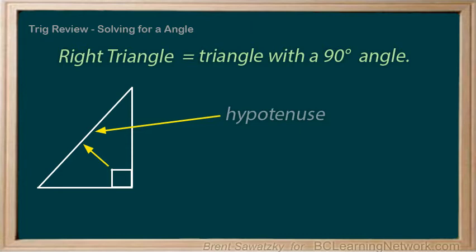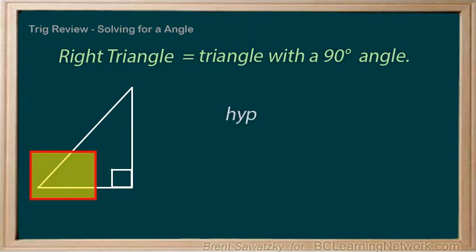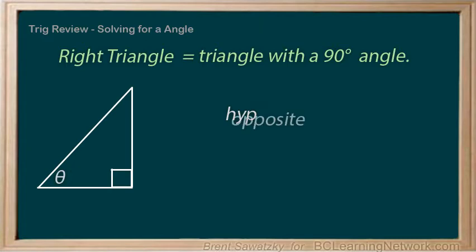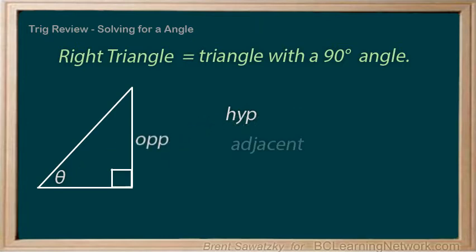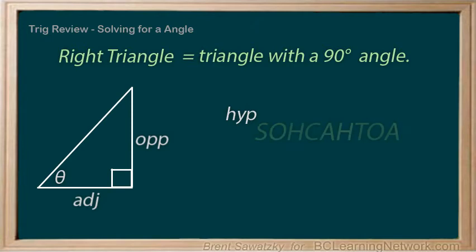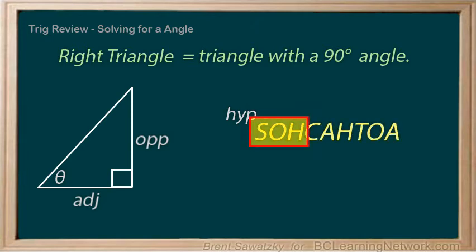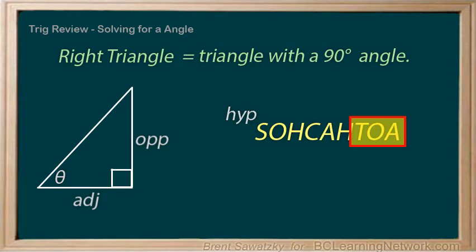Once we determine which angle we'll be looking for — let's call it theta — we can determine that the opposite side is right across from that angle, and the adjacent side is beside or adjacent to our angle. From there, we choose an appropriate trig ratio: SOHCAHTOA — sine equals opposite over hypotenuse, cosine equals adjacent over hypotenuse, and tan equals opposite over adjacent.